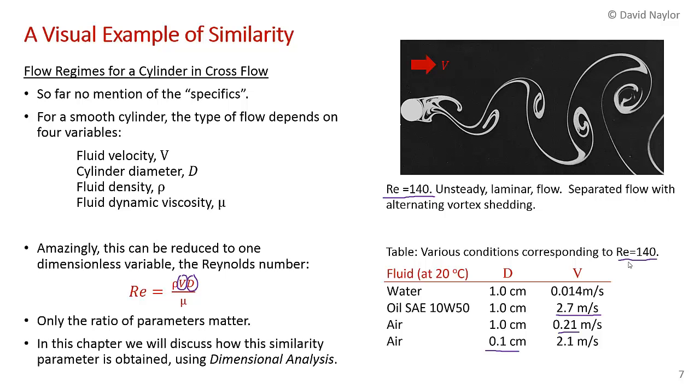In this chapter of the textbook we will discuss how this similarity parameter and others come about, and we'll be using something called dimensional analysis to do that.